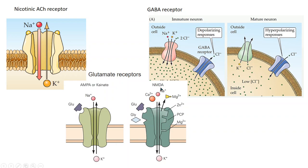In the case of the NMDA receptor, there are many other regulatory factors. If all necessary factors are already present, upon the binding of glutamate to the receptor, the channel will open and it will allow the movement of sodium, potassium, and calcium ions. So the main difference between the two groups of glutamate ionotropic receptors is that NMDA receptors also allow the movement of calcium ions in addition to sodium and potassium ions.